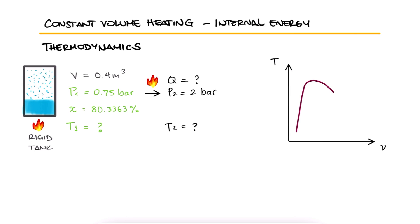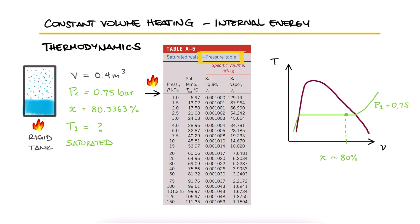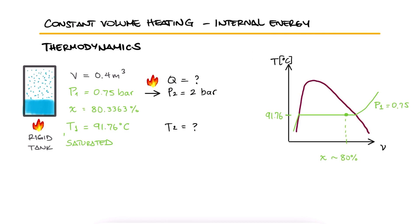Just like in that problem, we know that our water is in a saturated mixture state since we have a quality between 0 and 100%. We can go to our saturated water tables by pressure to find that our water must be exactly at the saturation temperature of 91.76°C for it to be saturated. And that's T1.